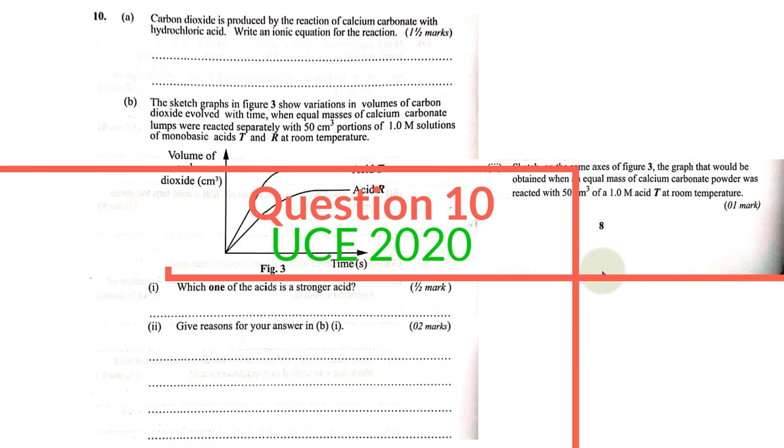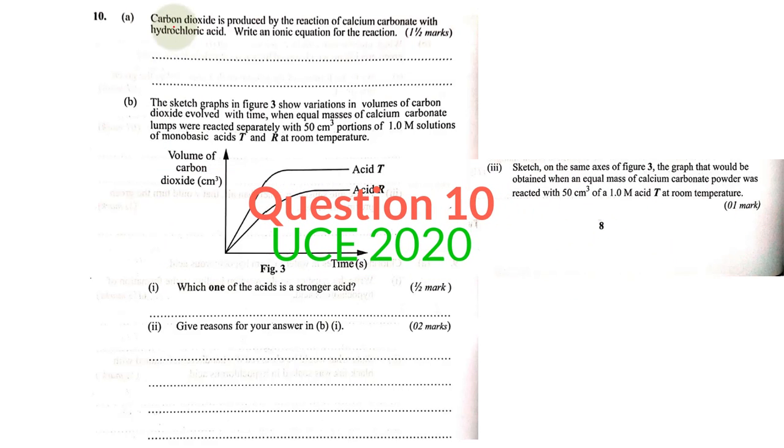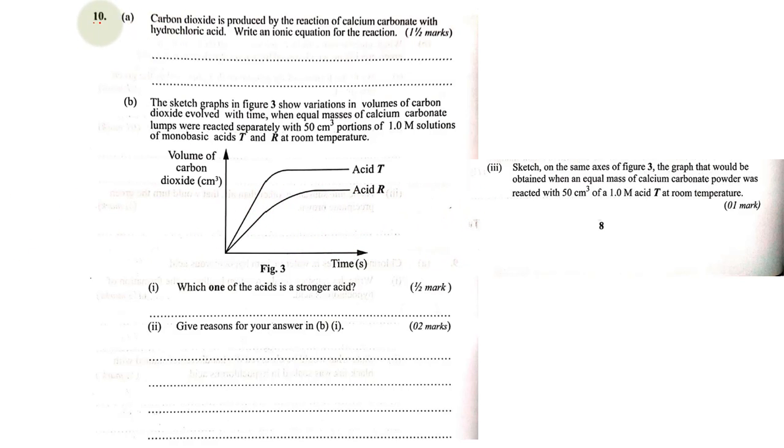Hello and welcome, we are going to look at the last question, question 10 of our UCE 2020 Chemistry Paper 2. So carbon dioxide is produced by the reaction of calcium carbonate with hydrochloric acid. Write an ionic equation for the reaction, one and a half marks.